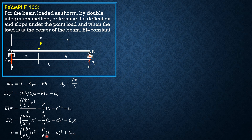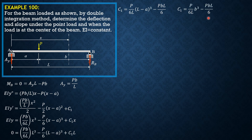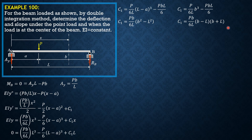Solving for C sub 1, transposing and dividing by L: C sub 1 equals P over 6L times the quantity L minus A cubed, minus PBL over 6. Taking note that L minus A equals B, so C sub 1 equals P over 6L times B cubed minus PBL over 6. Factoring out PB over 6L gives B squared minus L squared. Factoring further: PB over 6L times B minus L times B plus L. Note that B minus L equals negative A from the figure, so C sub 1 equals negative PAB over 6L times the quantity L plus B.